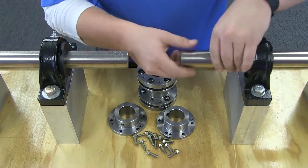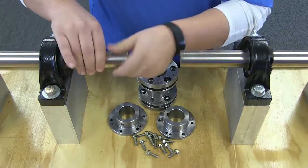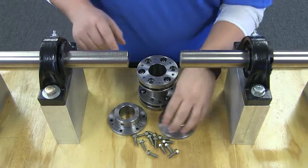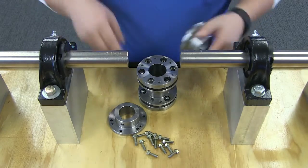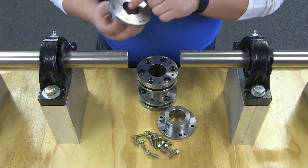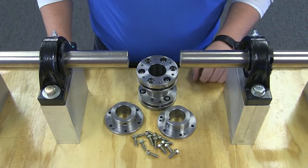Before you start, inspect both the driving and driven shafts, as well as hub bores, to make sure they are free of dirt and burrs. Also, be sure the keys fit on the shafts properly, and ensure that you have the correct measurement of your shaft diameter.